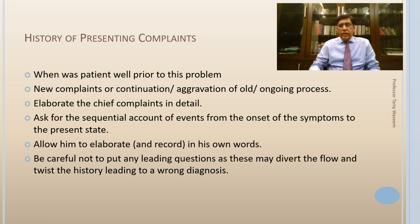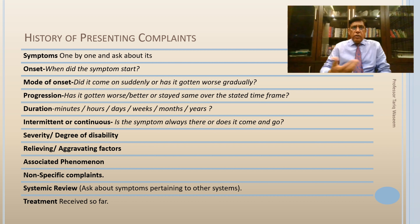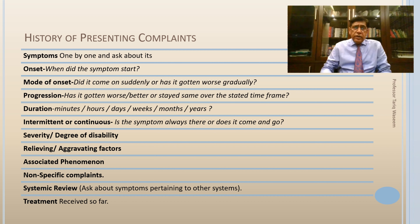The history of presenting complaint is listed by taking each symptom one by one. Note how it started, the mode of onset — whether sudden or gradual — how it progressed, how long the symptom has been present, whether it is continuous or intermittent, how severe it is, and how much it disturbs the patient's daily activities. Note any relieving or aggravating factors, other associated symptoms with that complaint, and any non-specific accompaniments.